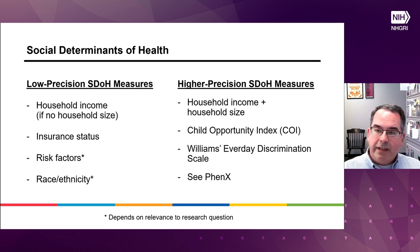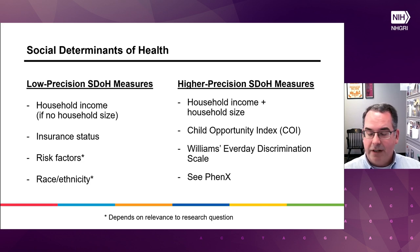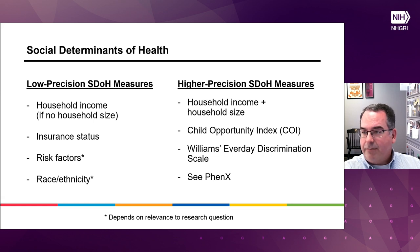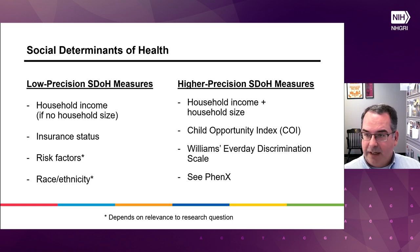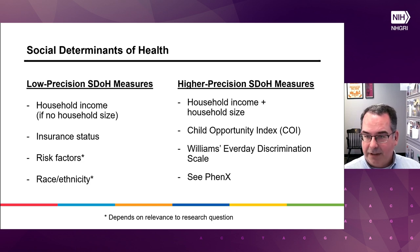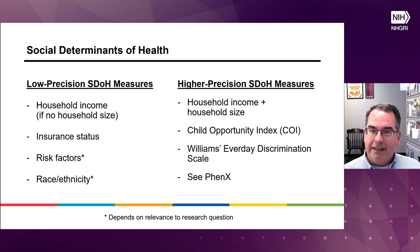Higher-precision social determinants of health include household income combined with household size, which gives a much better assessment of available funds for seeking healthcare. There are measures like the Child Opportunity Index, based on many factors about where a person lives, and directly elicited measures of interpersonal discrimination like the Williams Everyday Discrimination Scale. I'd encourage everyone to look at PhenX, which has a great selection of social determinants of health and considerations about how to collect this type of data. The point is that a lot of legacy datasets only include the low-precision options and don't include the higher-precision ones.